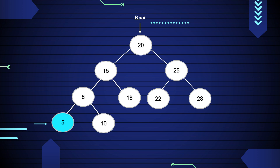So print 10, then print 8. Post-order traversal of 8 leads to 15. Move towards the right subtree of 15; 18 is the right subtree of 15 and it has no child, so print 18. After that print 15. Post-order traversal for 15 is finished and the left subtree of the binary tree is fully traversed.